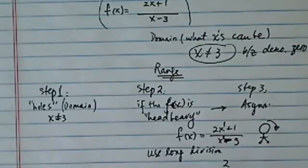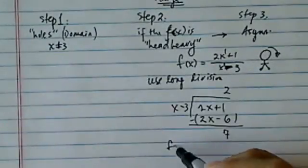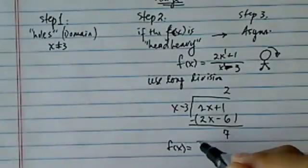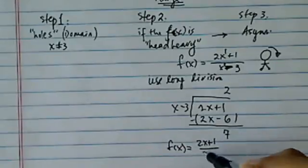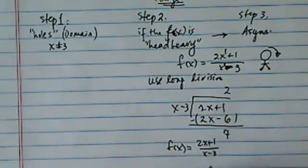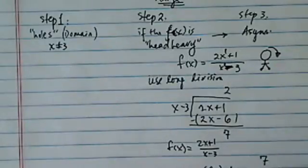I'm going to put a 2 here. So it's 2x minus 6. Since we're subtracting, I have a remainder of 7. So basically this function, f(x), with 2x plus 1 on top divided by x minus 3, is really equal to constant 2 plus remainder of 7 divided by x minus 3.